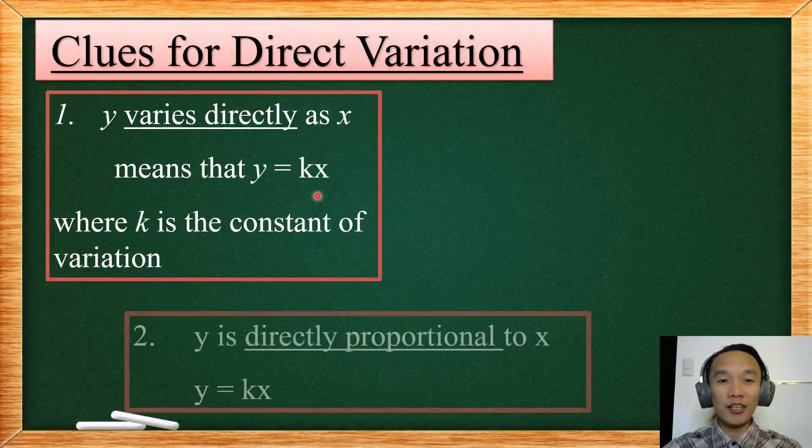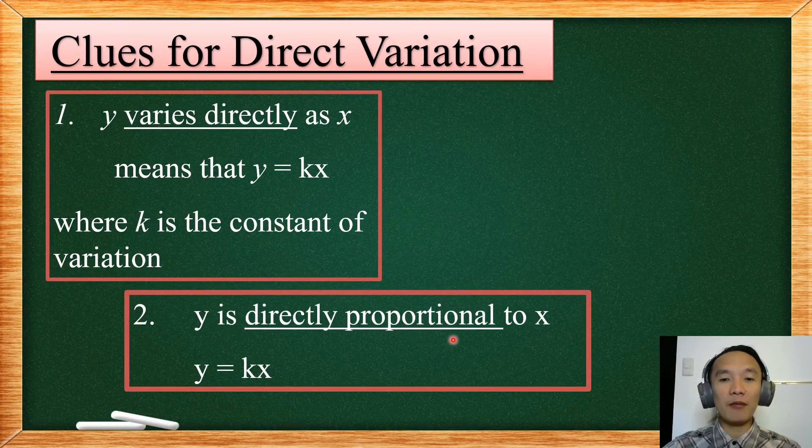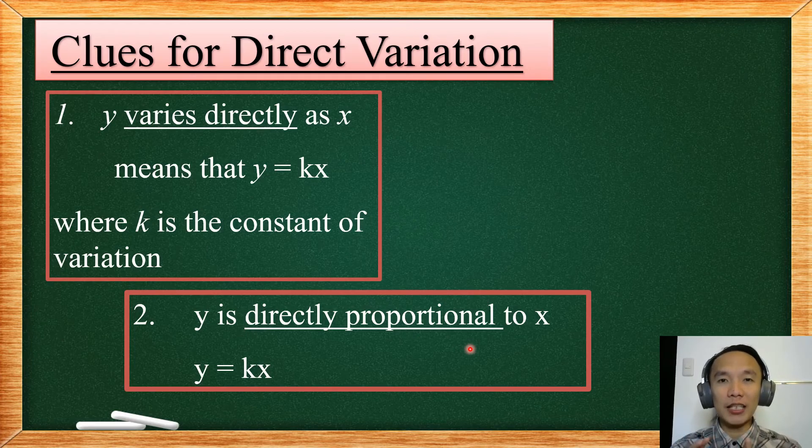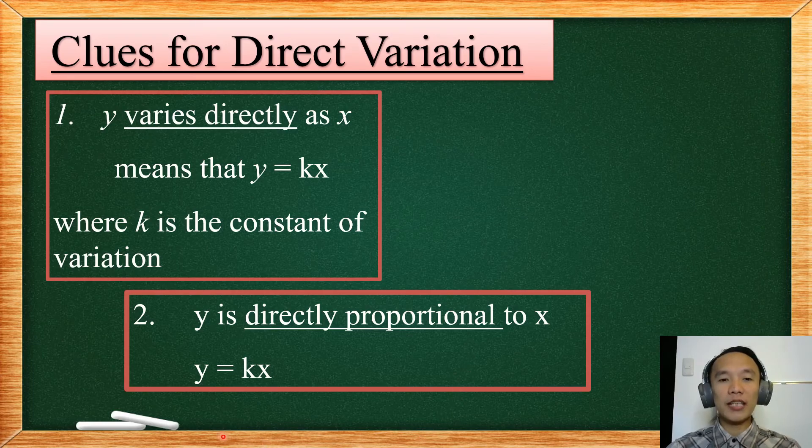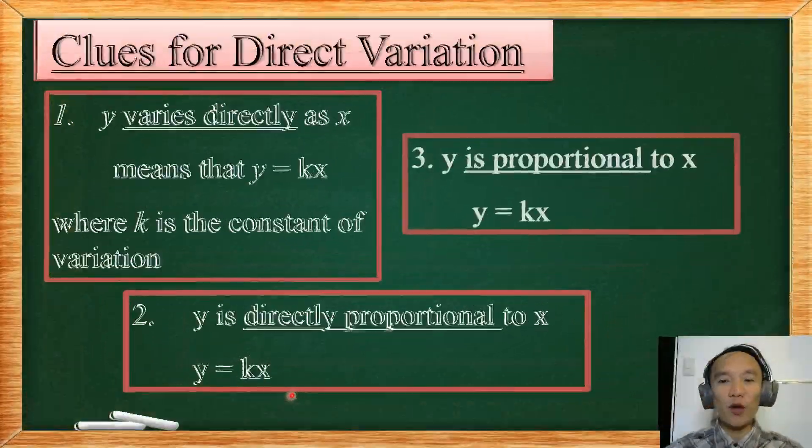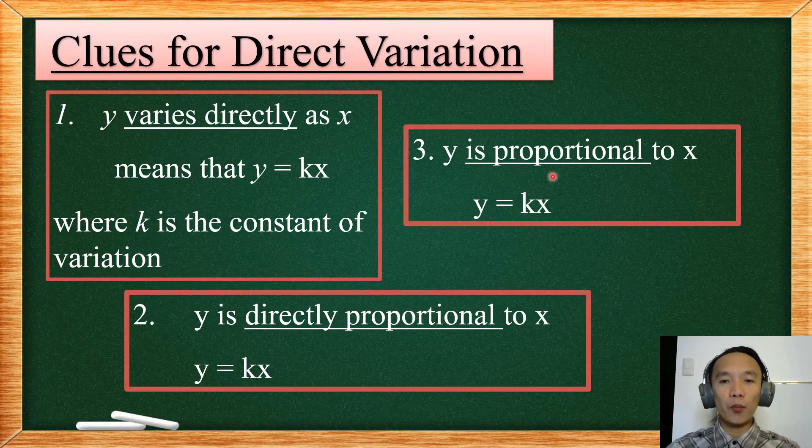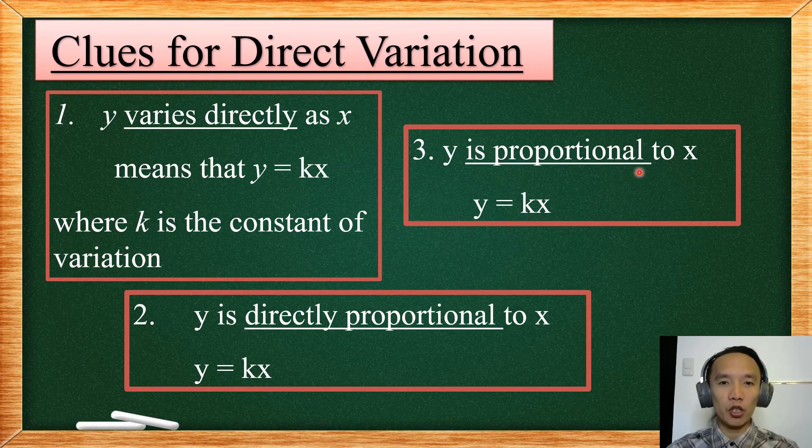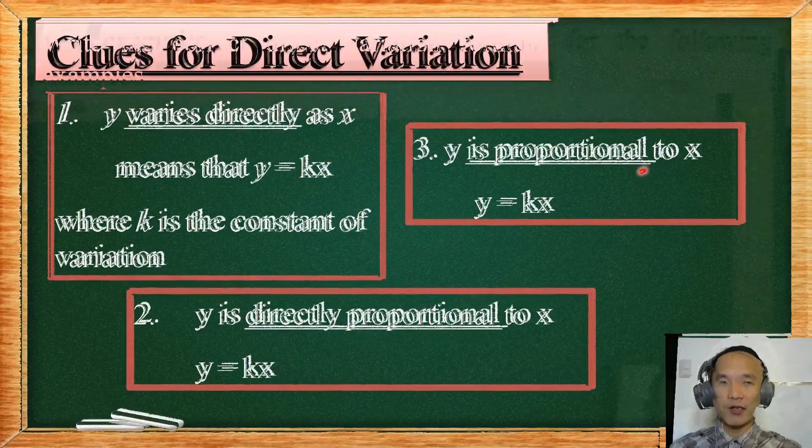The second clue is the word directly proportional. If you see this word, it is still a direct variation. You will still have the same equation, Y equals to KX. And the third one is the word proportional or is proportional. It also means that it is a direct variation.